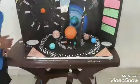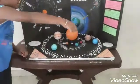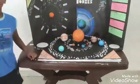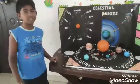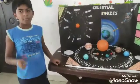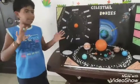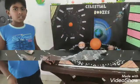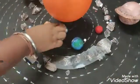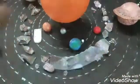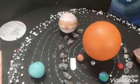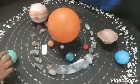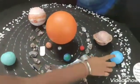Sun is the star in the center of the solar system. There are 8 planets in the solar system — 4 inner planets and 4 outer planets. The 4 inner planets are Mercury, Venus, Earth and Mars. The 4 outer planets are Jupiter, Saturn, Uranus and Neptune.